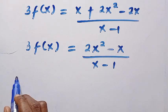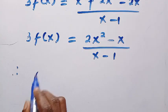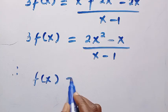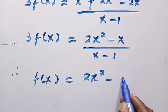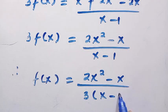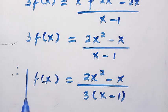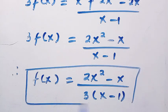Our final answer for f of x is given as 2x squared minus x divided by 3 times bracket of x minus 1. And that is the final result to this first functional equation.